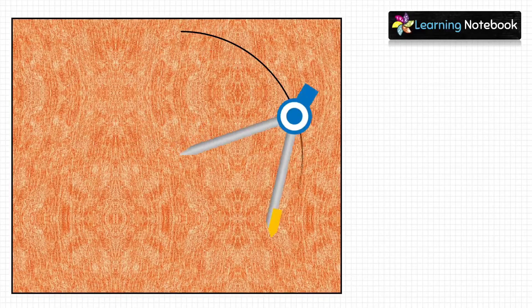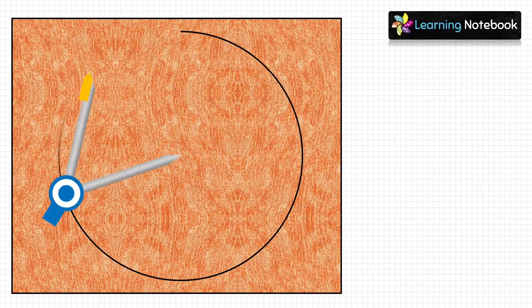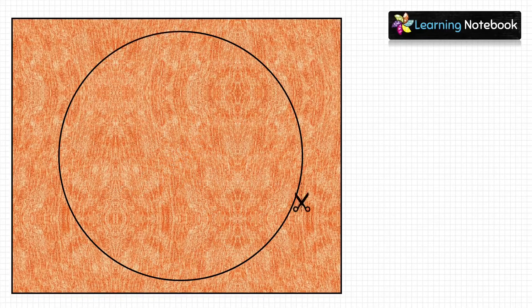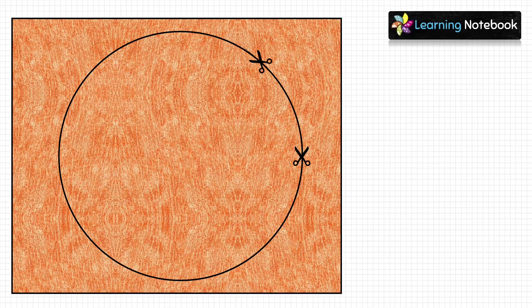Next, take the orange colored sheet and again draw a circle of 15 centimeters on it, and then carefully cut out this circle.